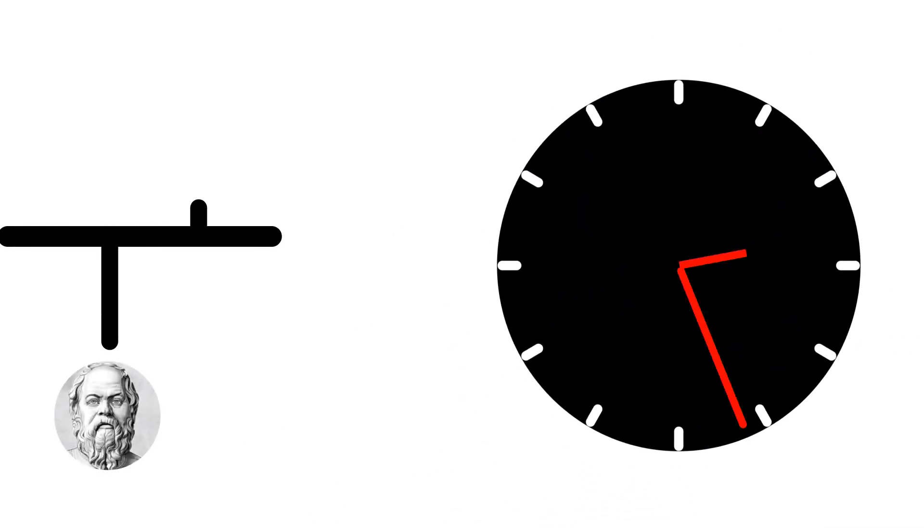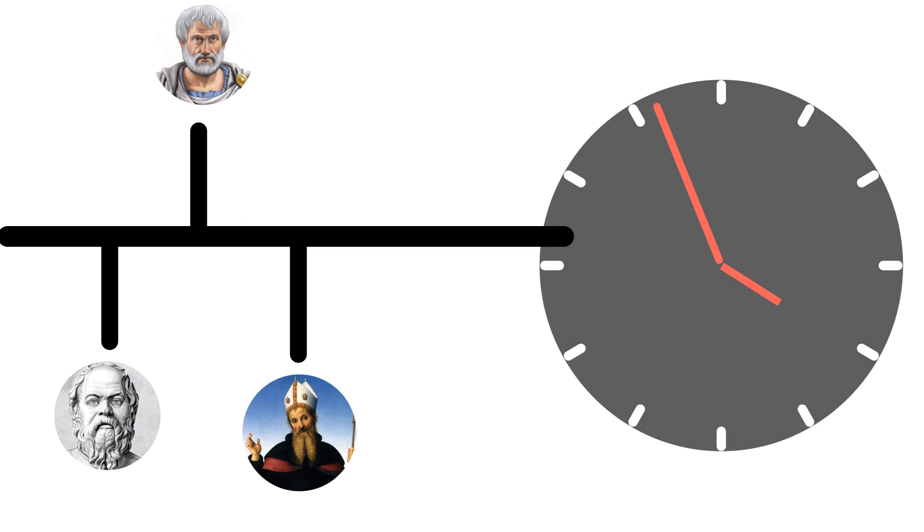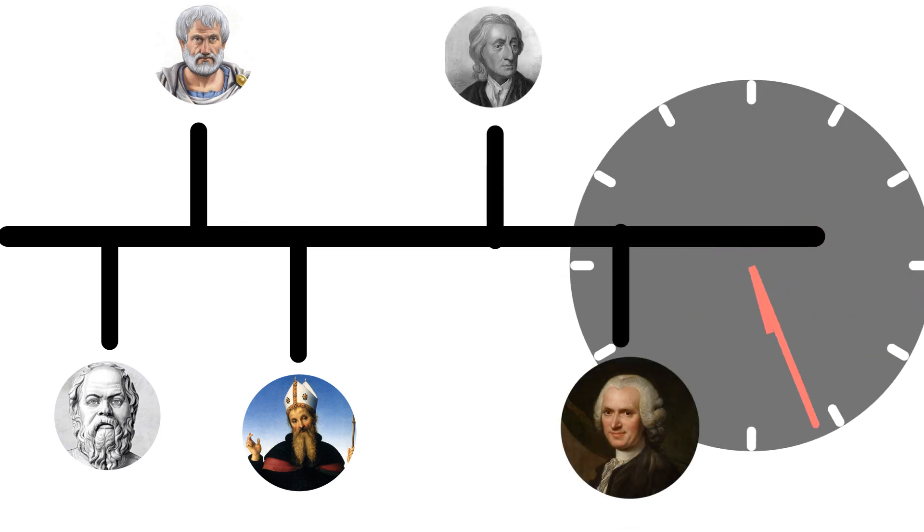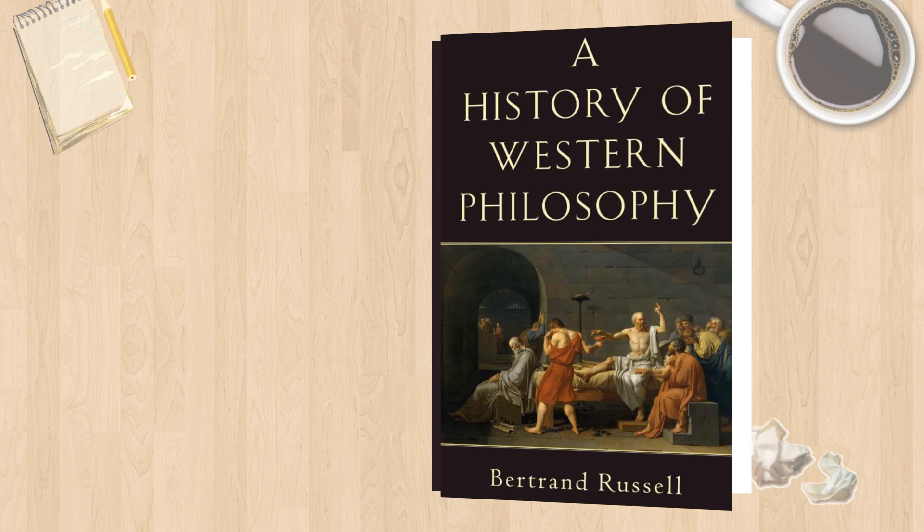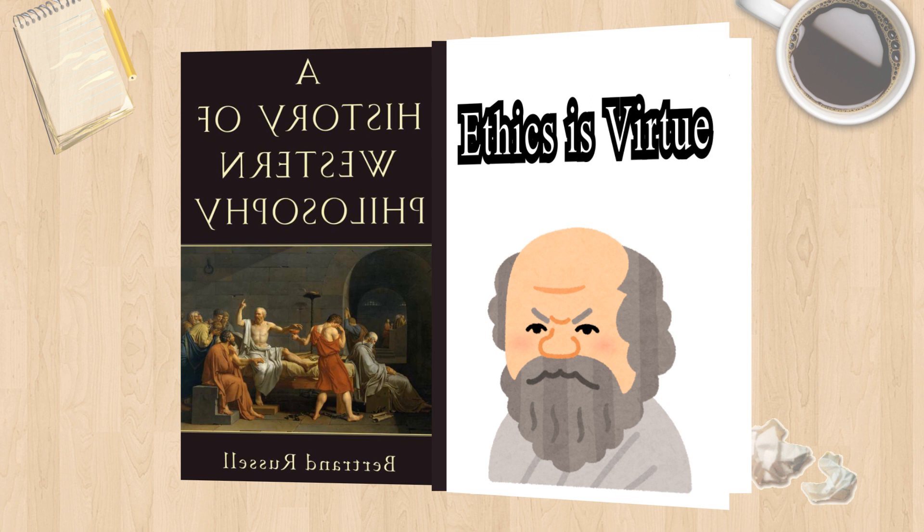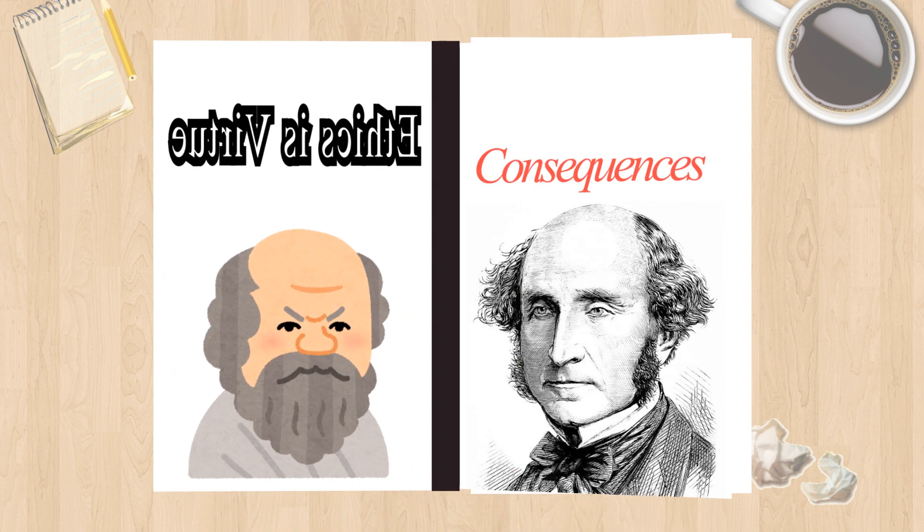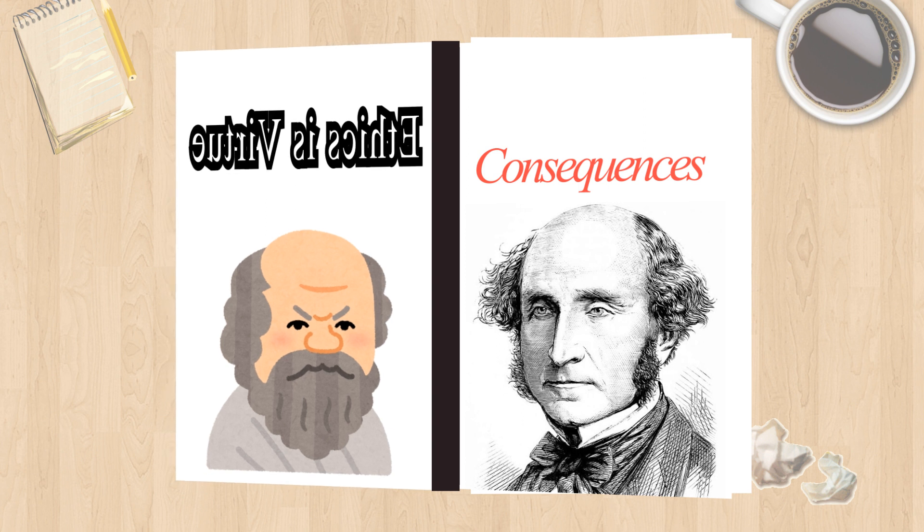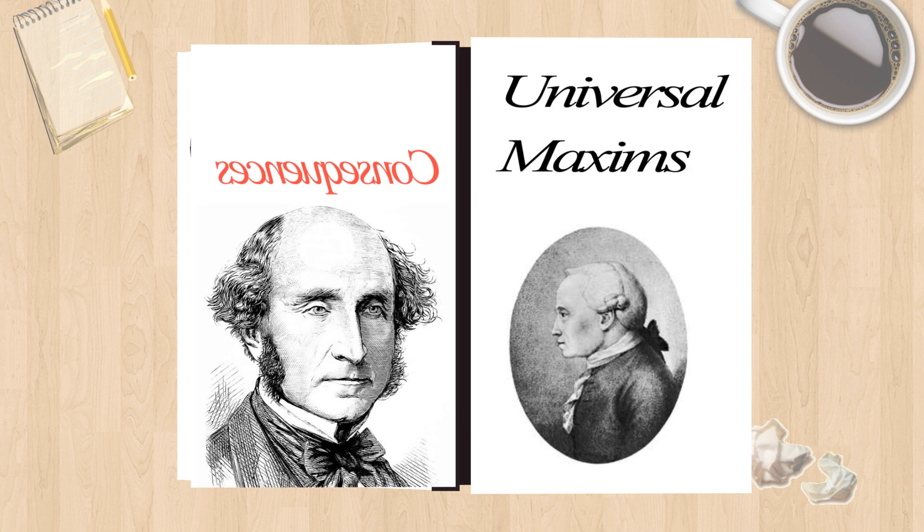Throughout the centuries, philosophers from all walks of life have tried to define morality in a myriad of incompatible ways. The Greeks, for instance, defined it in terms of virtue. English philosopher John Stuart Mill defined it in terms of good consequences. Immanuel Kant explained it in terms of universal maxims, and the list goes on and on and on.